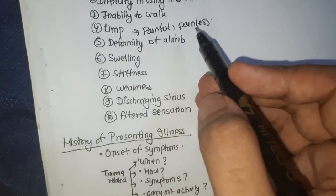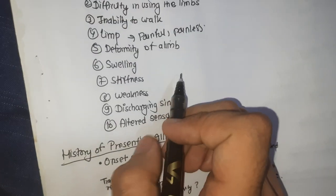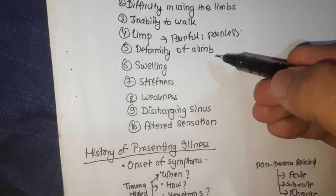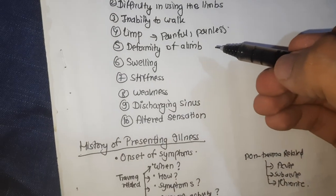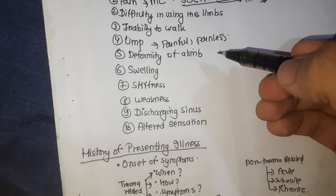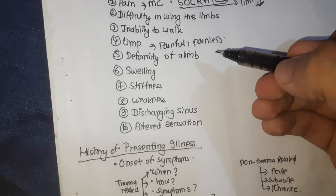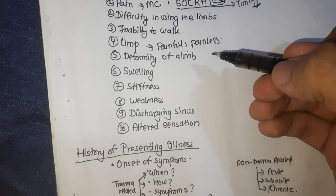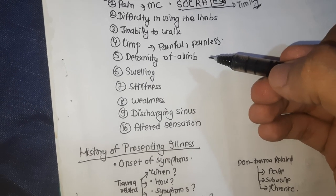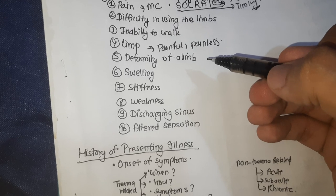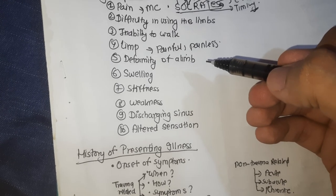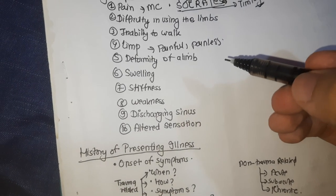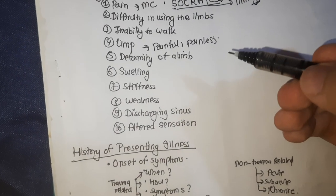Regarding deformity of the limb, it is required to know the onset of deformity. Deformity following an episode of injury could be due to subluxation or dislocation of a joint, or malunion or nonunion of a fracture, or may be a result of complications related to trauma. In an acute painful condition, deformity comes up due to muscle spasm initiated by pain, and later contracture of muscle and capsule develops. Gradual progress of deformity occurs in chronic infection, growth-related disorders, or gradually worsening disease. It is important to know whether the deformity is progressive or static.